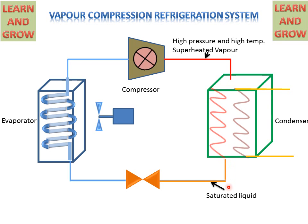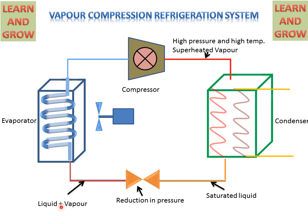Then this liquid goes to the Expansion Valve, where a reduction in pressure and temperature will take place. Then this reduced temperature and pressure liquid will go to the Evaporator. In the evaporator, we have a liquid plus vapour mixture, and this liquid will be converted into vapour and takes all the heat from that space, cooling and lowering the temperature of that space.